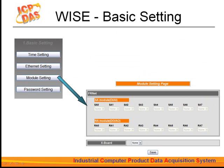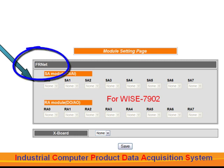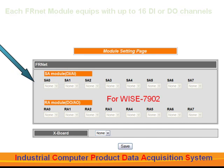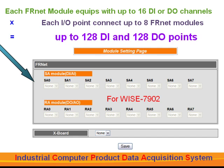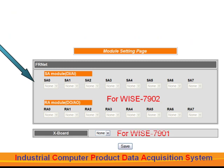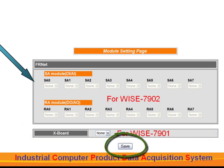The WISE 7902 module will be available soon. WISE 7902 is designed for connecting with ICP-DAS FR-NET modules, and is good for applications that require large-scale deployment. Each FR-NET module is equipped with up to 16 digital input or digital output channels. Each I/O point may connect up to 8 FR-NET modules, giving you up to 128 digital input and 128 digital output points. For each controller to function accurately, you will need to select the corresponding plug-in export type from the drop-down list and save the settings on this web page.